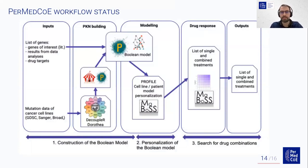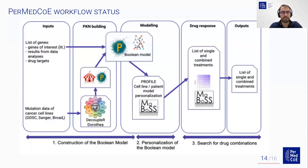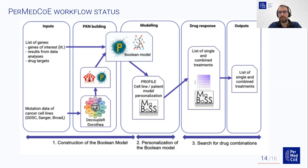As an example of a workflow, I wanted to bring up the drug synergies cancer modeling workflow. We have a list of different inputs: a list of genes that is fed into the model, also mutation data from different cell lines. Then there is a model construction and personalization step where CARNIVAL and PhysiCell, along with a number of the different core tools, are used to produce a matrix of different drugs — a list of different single and combined treatments that could be used for this purpose.